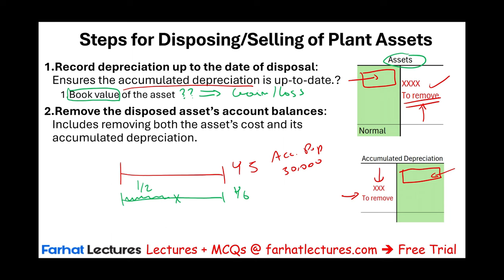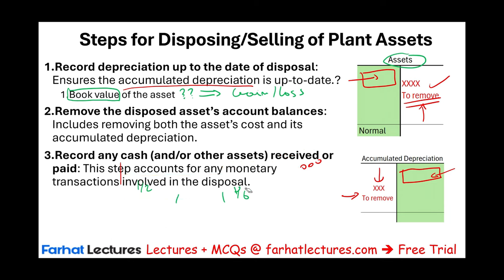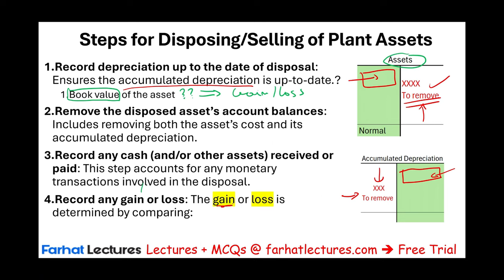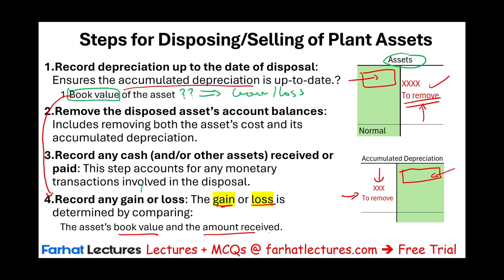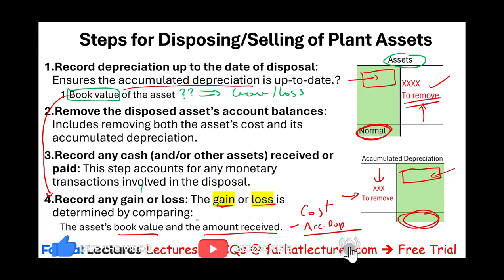If you received cash or paid cash, you would either debit cash or credit cash. Sometimes you might have to pay cash to get rid of an asset; often you're going to receive some cash for it. Then you determine whether you have a gain or a loss. Compute the book value first — the book value is the cost of the asset minus accumulated depreciation. Comparing book value to the amount received determines your gain or loss.